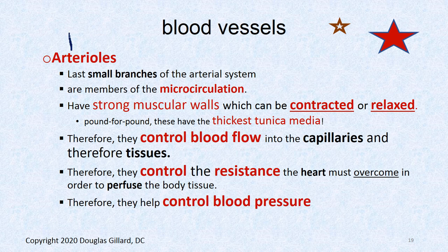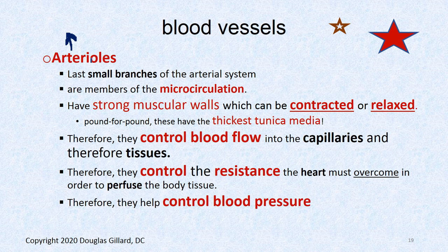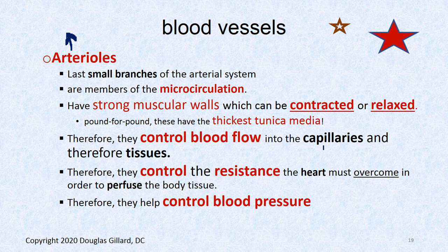Arterioles — the first word that pops into your mind should be blood pressure. Pound for pound, these have the thickest tunica media of any vessel in the body, and that's where blood pressure is controlled. Venules can also help control pressure. Arterioles are resistance vessels — they can open and close their diameter, feeding capillaries and controlling the capillary pressure. Capillaries are very finicky — they need a perfect amount of pressure so nutrients are driven out into the interstitium and waste is returned.